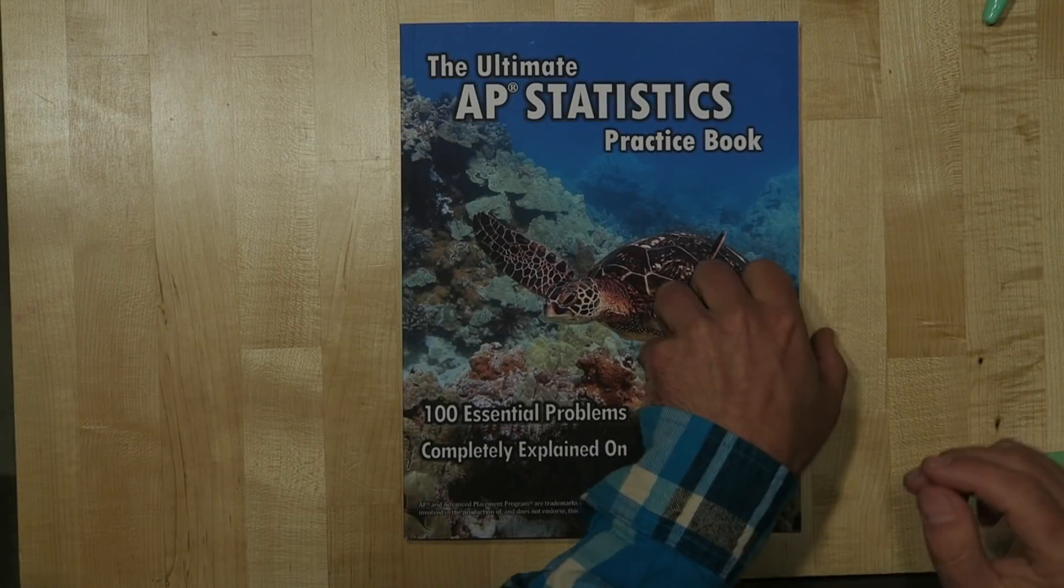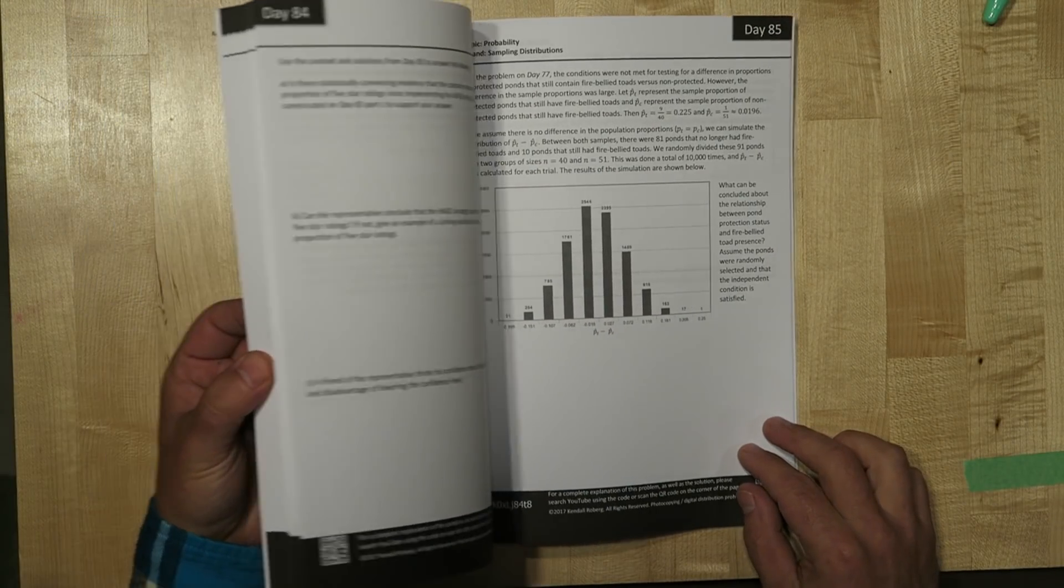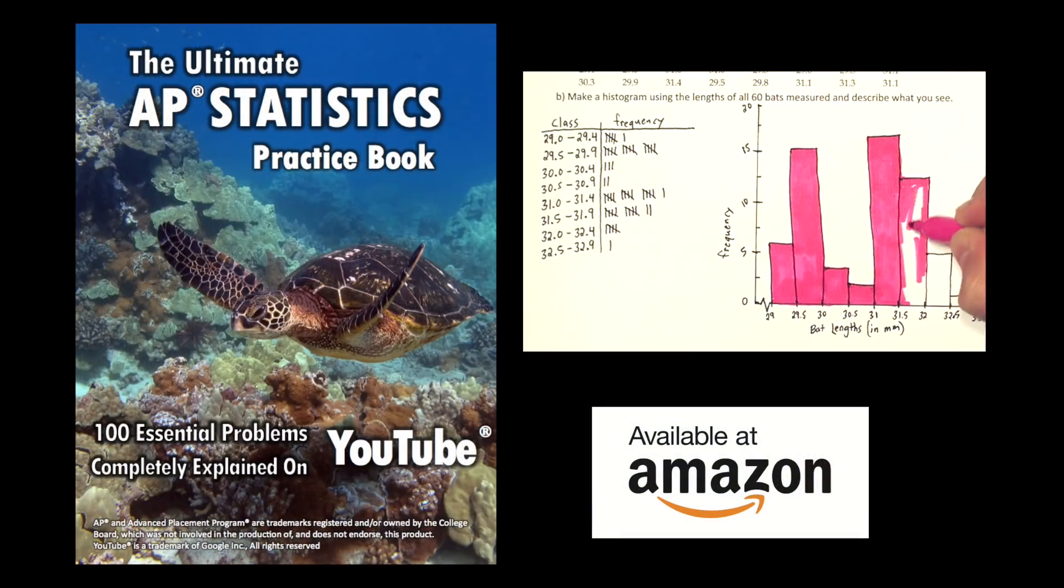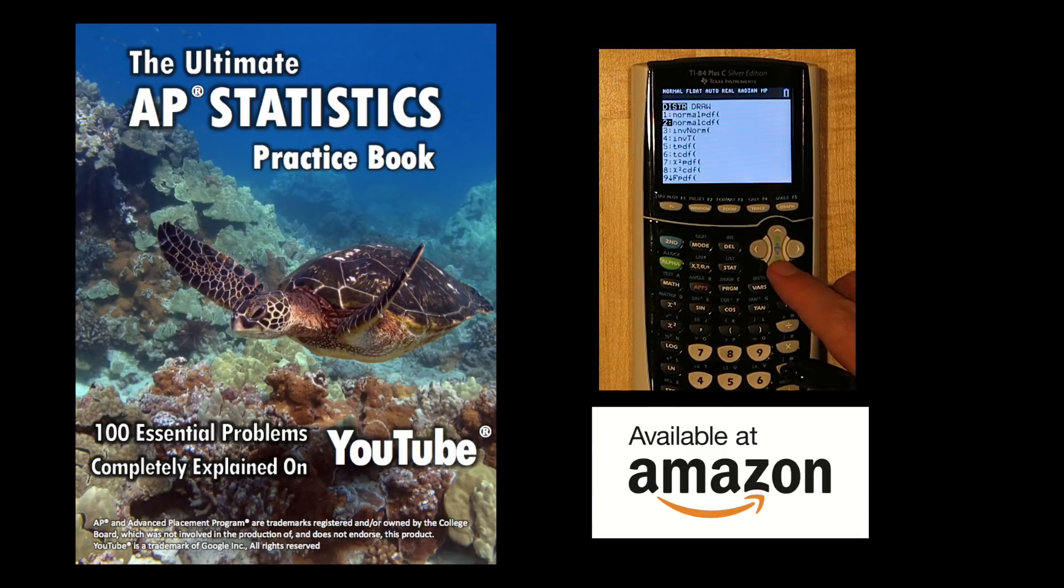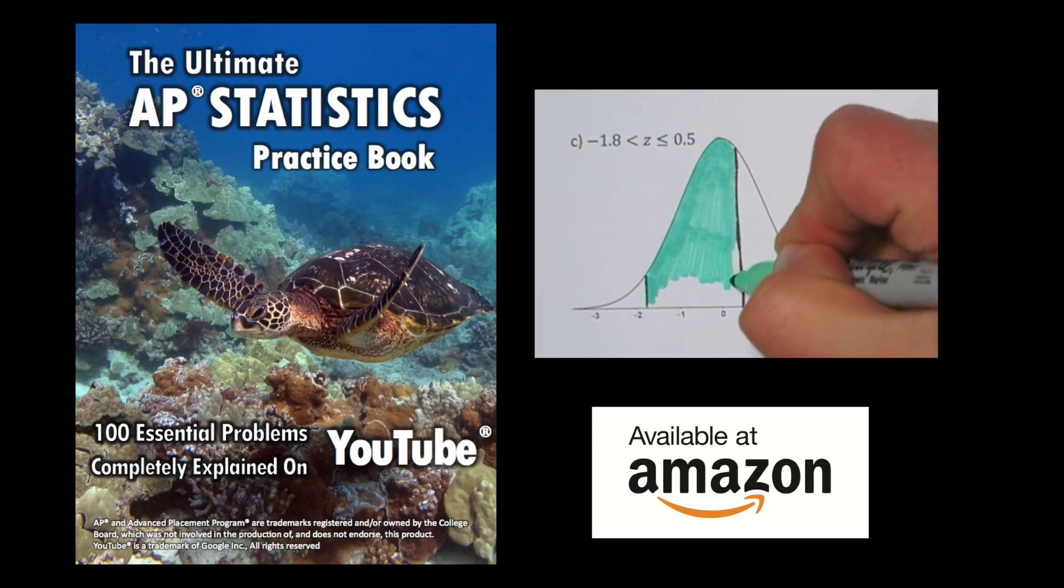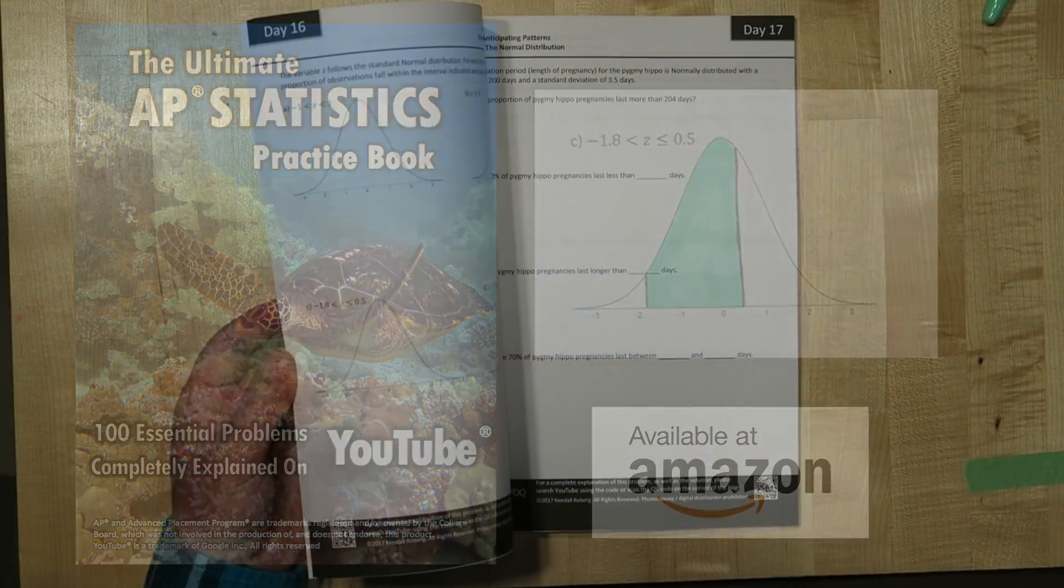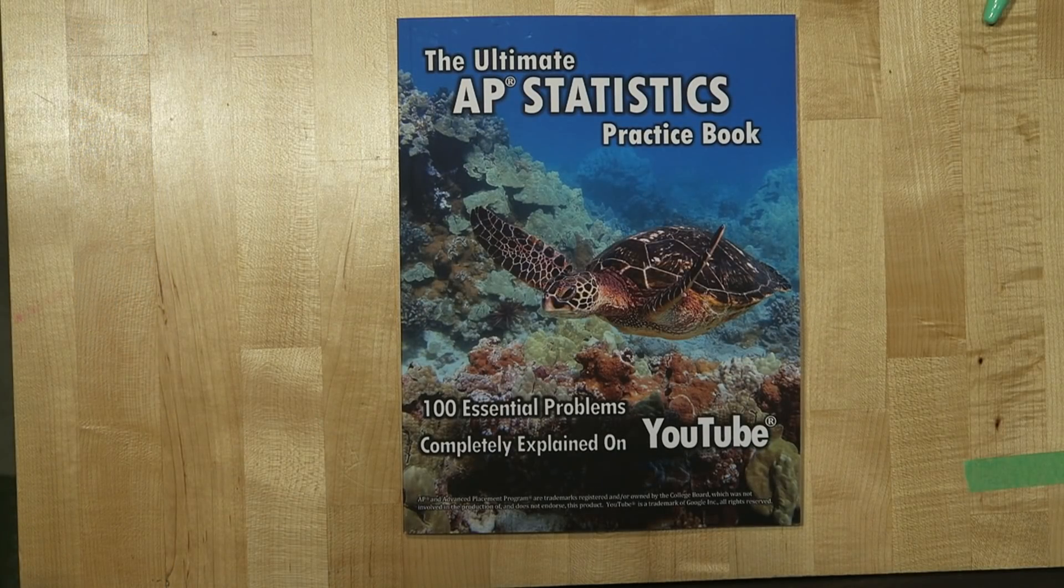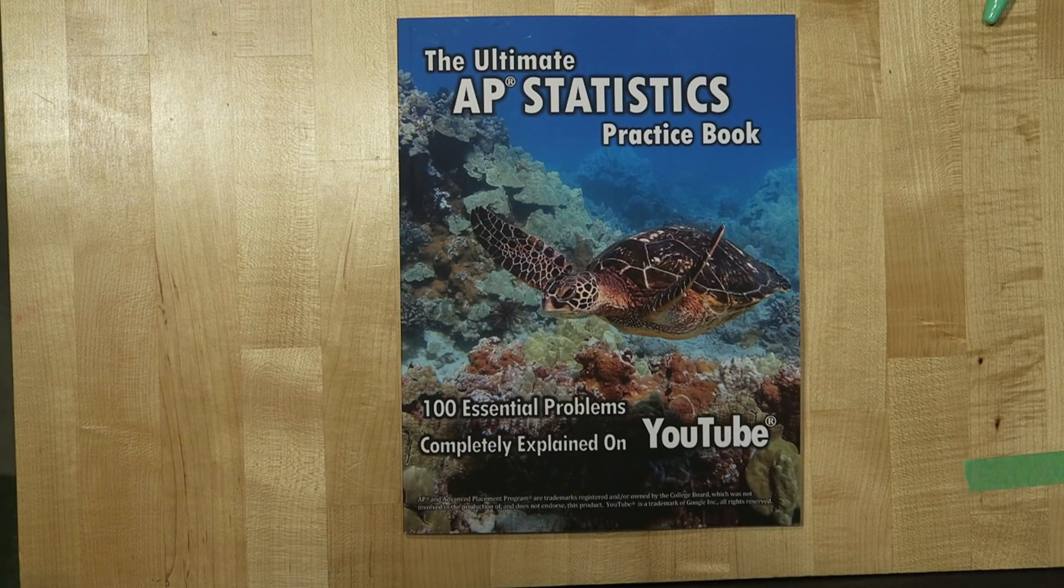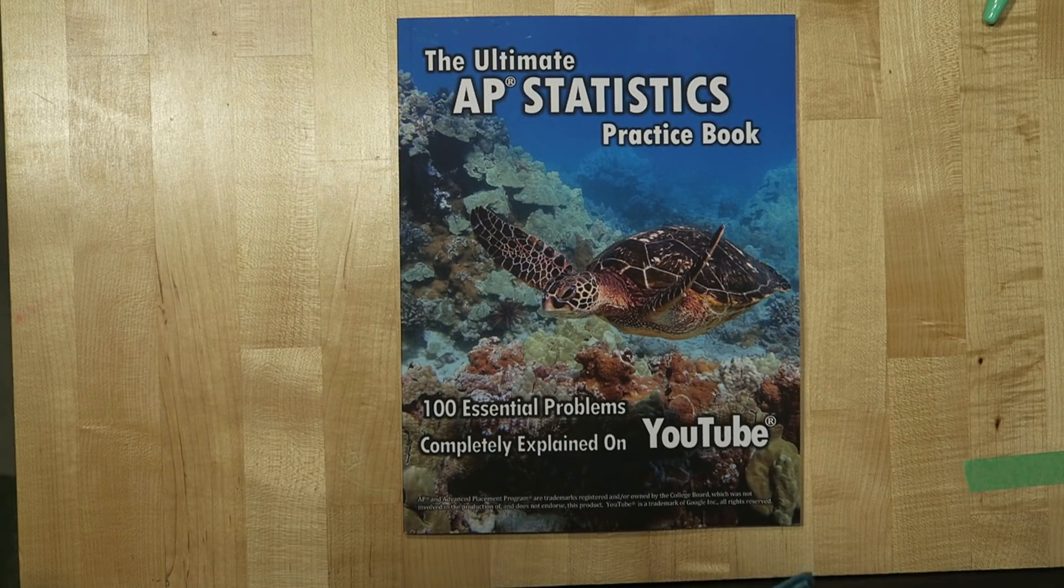If you liked my explanation of this problem, you might like my book, The Ultimate AP Statistics Practice Book. It has 100 problems in it, and every single problem has a YouTube video like this explaining every single step, every single calculator command, everything. A lot of classes this year have used this book for a study aid for the AP exam, and some teachers have even used it for a flipped classroom design. Also, if you're an AP stats teacher or a college statistics teacher and you want a free copy of this book, send me an email and I'd be happy to send you one.